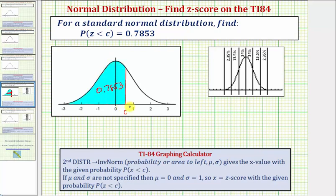We can find this value of c using the TI-84 graphing calculator and the inverse norm function found under the distribution menu. Once we enter the inverse norm function, we'll enter the probability or area to the left of the value of c.